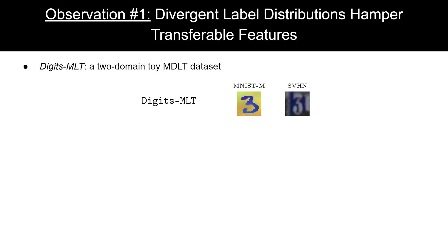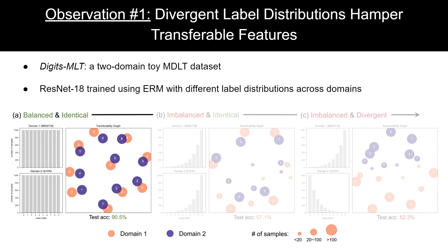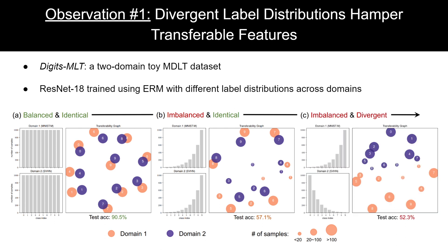Having set up the stage, we make important observations. We first train a vanilla ResNet-50 model on a two-domain digit dataset, vary the label distributions of these two domains, and plot the learned transferability graph. Interestingly, when the labels are balanced and identical across two domains, the model can easily learn good representations with high accuracy, where different classes are aligned across domains. When we make the label distributions long-tailed but still identical across two domains, the representations learned are still aligned for majority domain-class pairs, but not for the minority ones. Furthermore, when we make the label distributions both divergent and imbalanced, the features learned are no longer transferable, with a clear domain gap and the worst test accuracy.